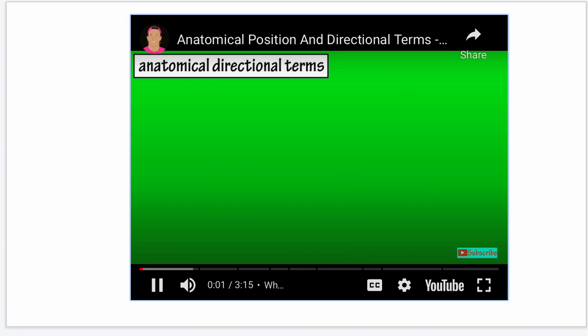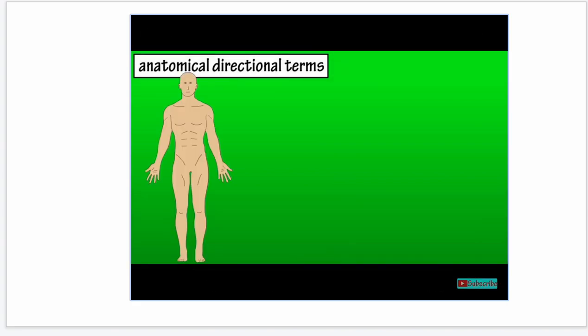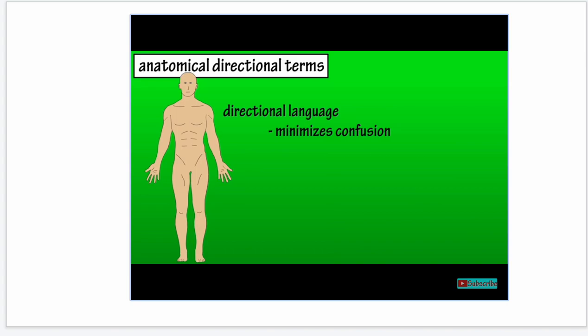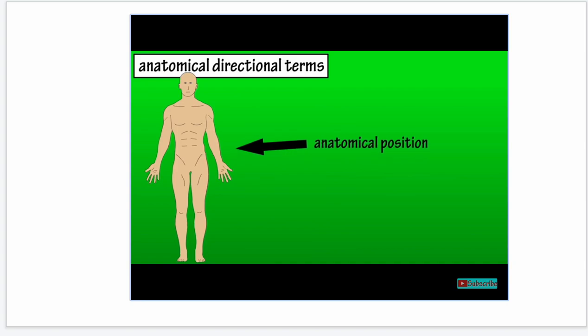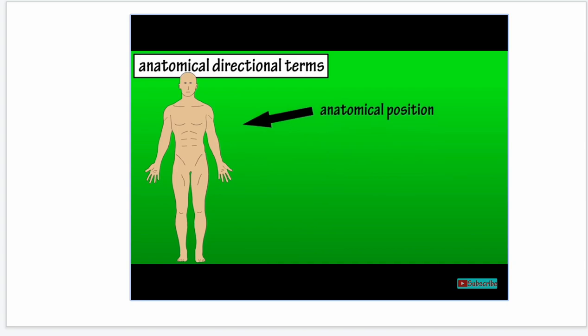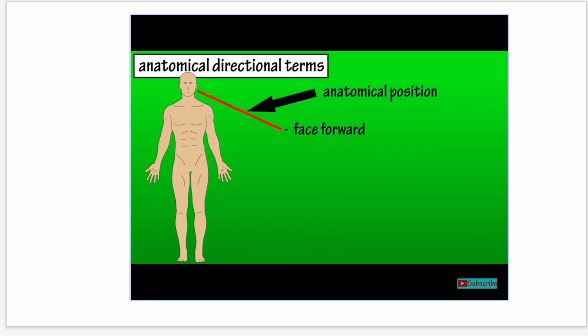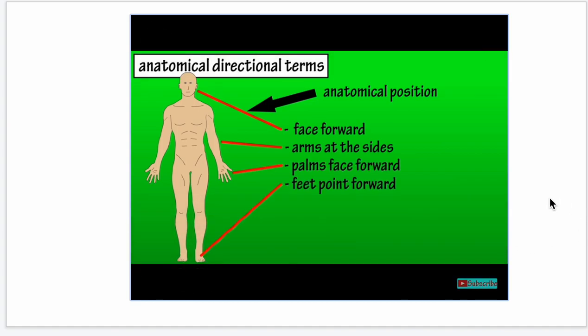Anatomical directional terms: a directional language of anatomy exists in order to minimize confusion when discussing areas or specific points on the body. This directional language or terminology is used in reference to the anatomical position. The anatomical position is when a person stands erect, face pointing forward, arms at the sides, palms facing forward, and feet also pointing forward.